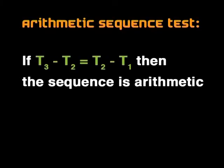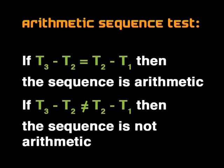This brings me to a very useful test — the arithmetic sequence test. If term 3 minus term 2 equals term 2 minus term 1, then the sequence is arithmetic. If term 3 minus term 2 does not equal term 2 minus term 1, like in the example we just did, then the sequence is not arithmetic.